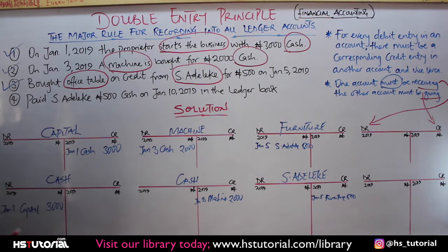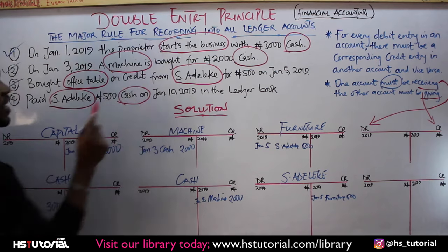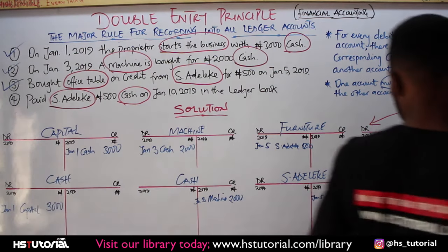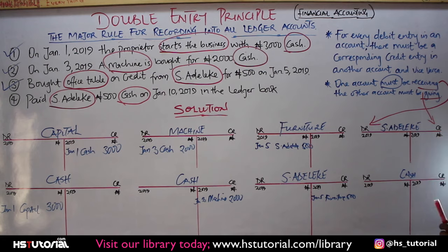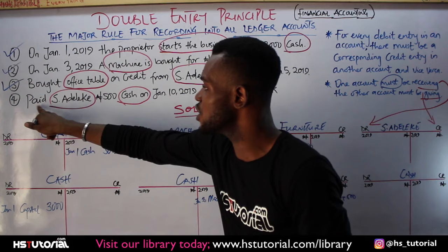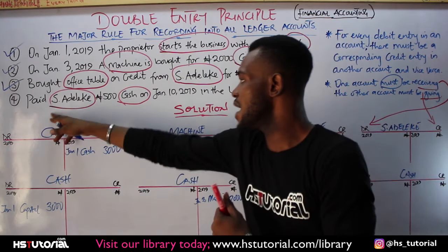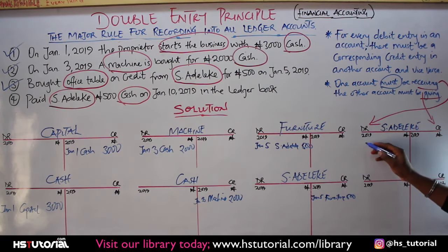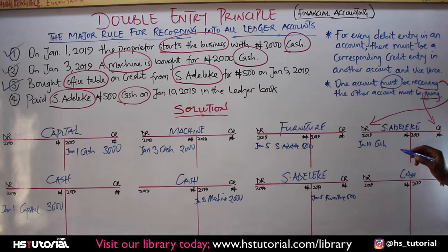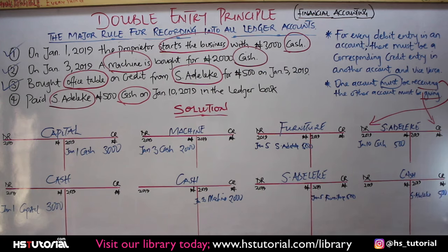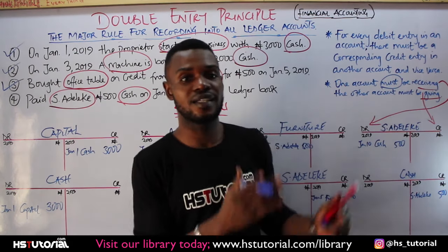The last question says: paid A.S. Adelike 500 Naira cash. We create an A.S. Adelike account and a cash account. A.S. Adelike received money, so the A.S. Adelike account is debited. Under the A.S. Adelike account, on January 10th, you write 'cash' and the value 500. Under the cash account, you write 'A.S. Adelike' and the value 500. This is exactly how to treat questions under the ledger books of accounting.